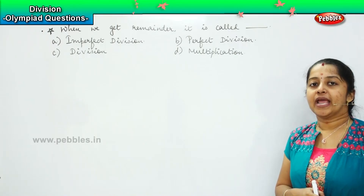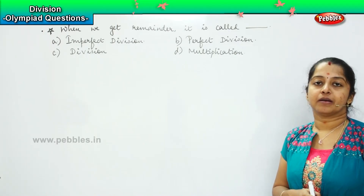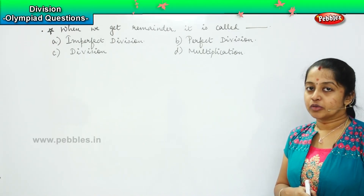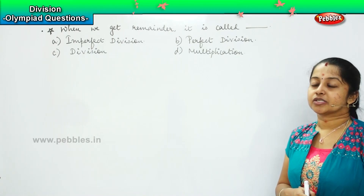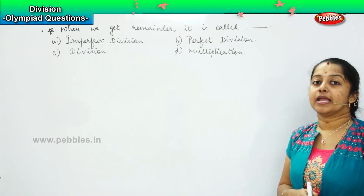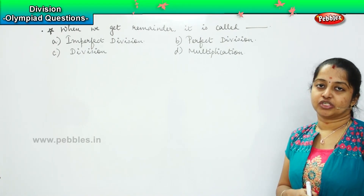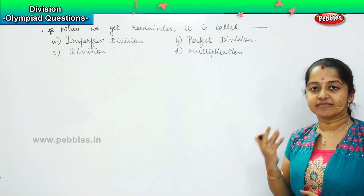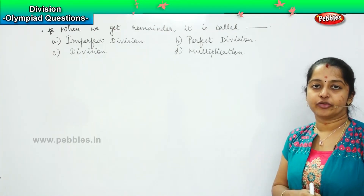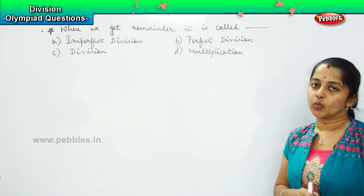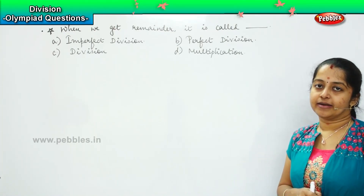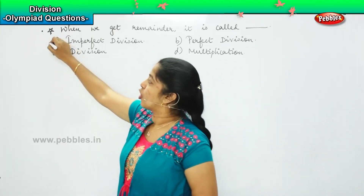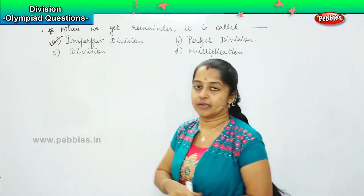But when I have some remainder remaining, then that leftover procedure is called as the imperfect division. Because I am not able to divide equally — I have some quantity left with me which cannot be divided. So, my right answer will be option A.